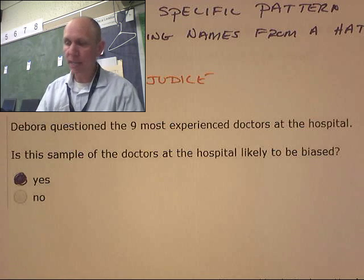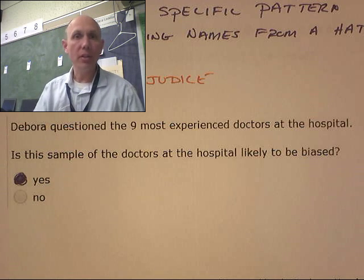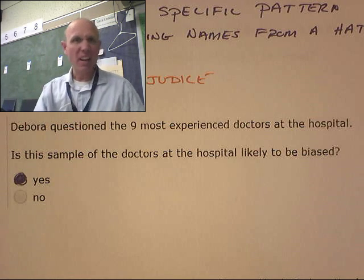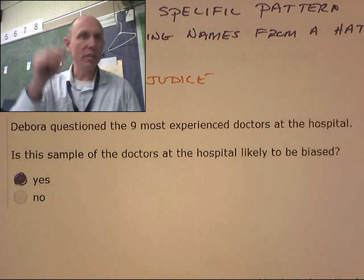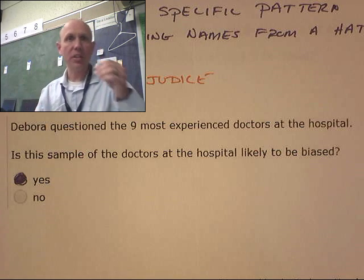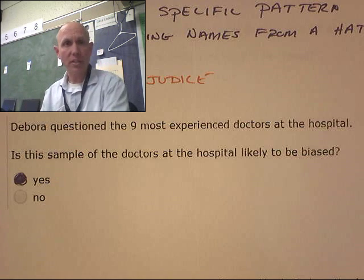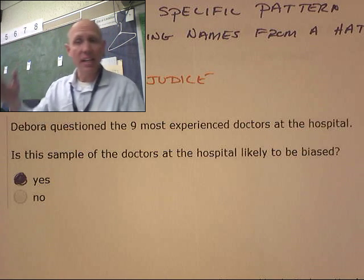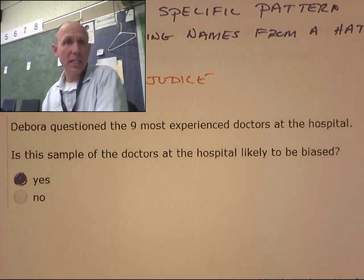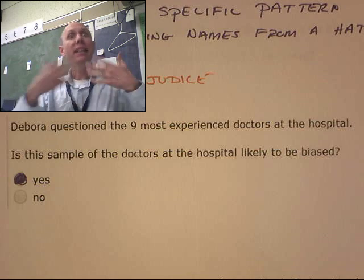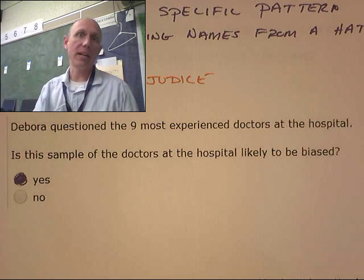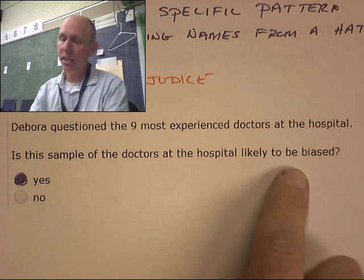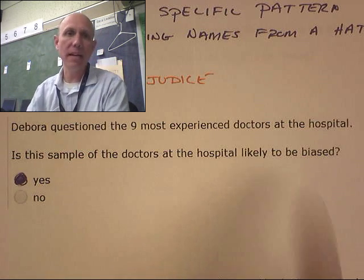If I want to look at an entire hospital, maybe I should just randomly select a bunch of names, and I'll get some nurses and some doctors, and I'll get some inexperienced doctors and some experienced doctors, and some orderlies. That would represent a hospital. These guys are going to have a completely biased perspective.